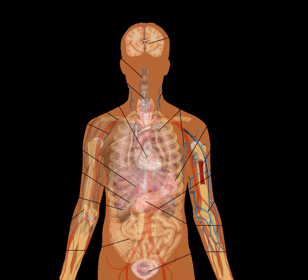Organs are collections of tissues with similar functions. Plant and animal life relies on many organs that coexist in organ systems. Organs are composed of main tissue, parenchyma, and sporadic tissues, stroma.